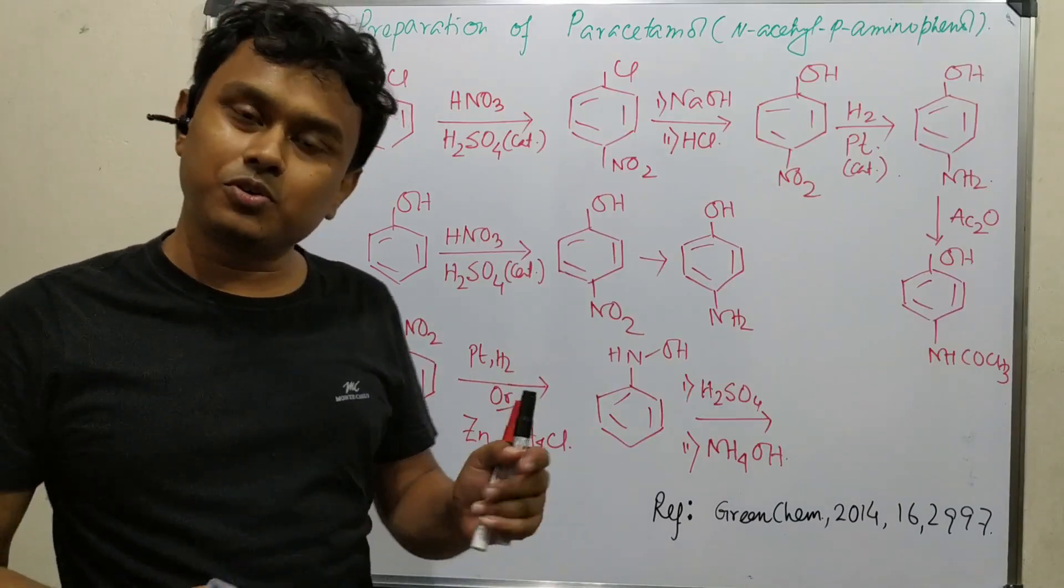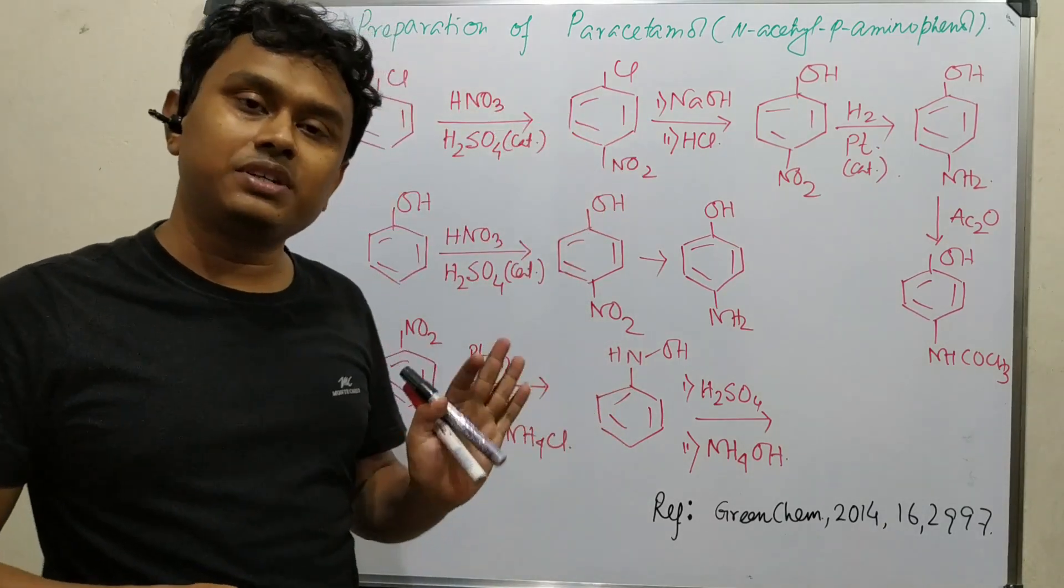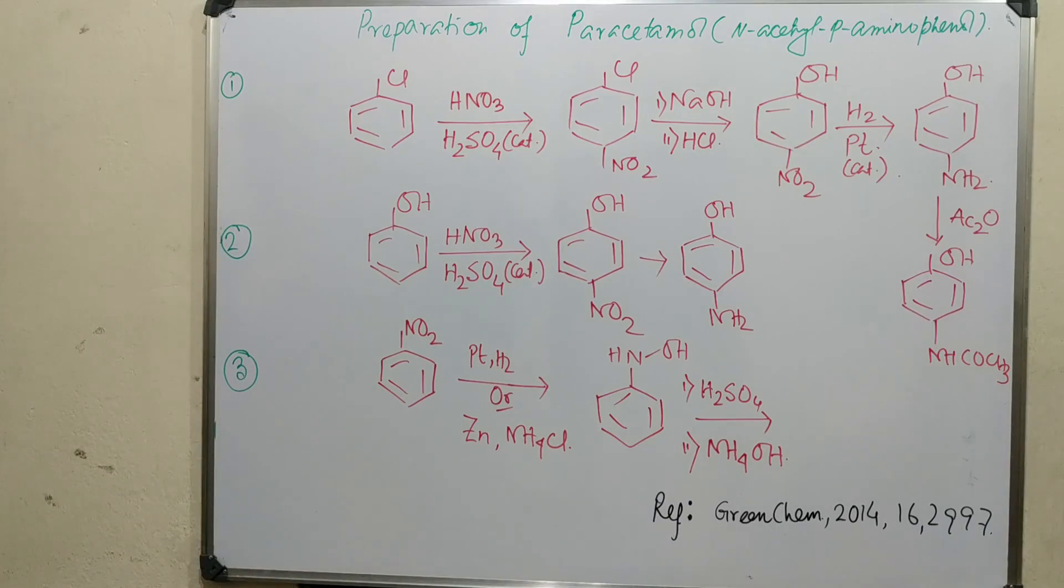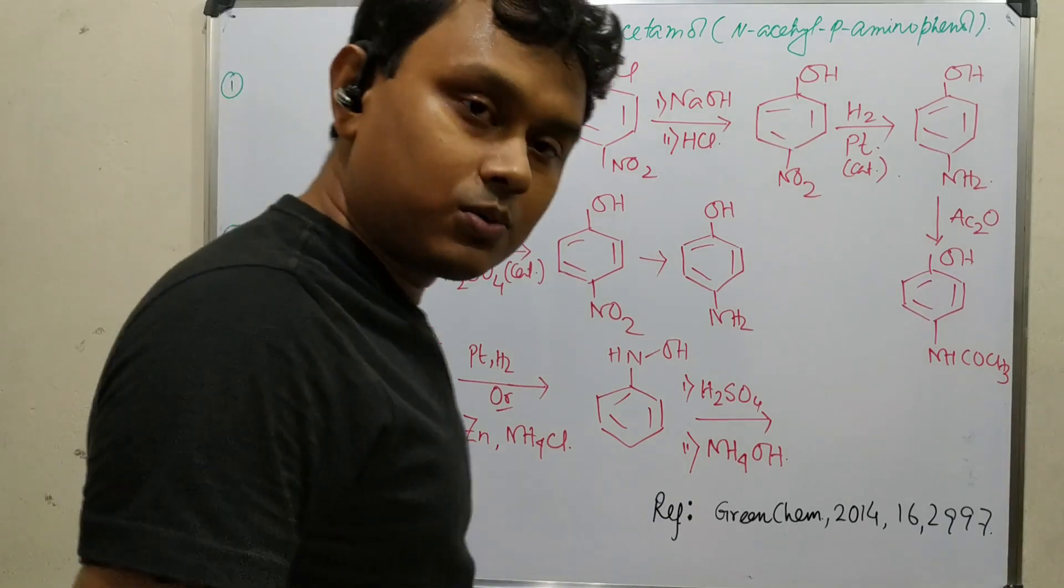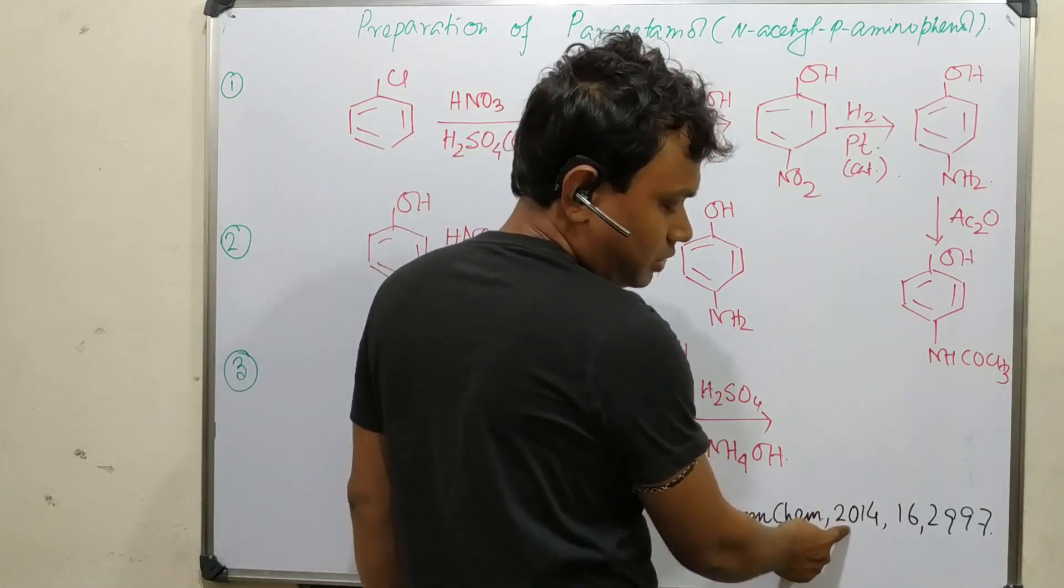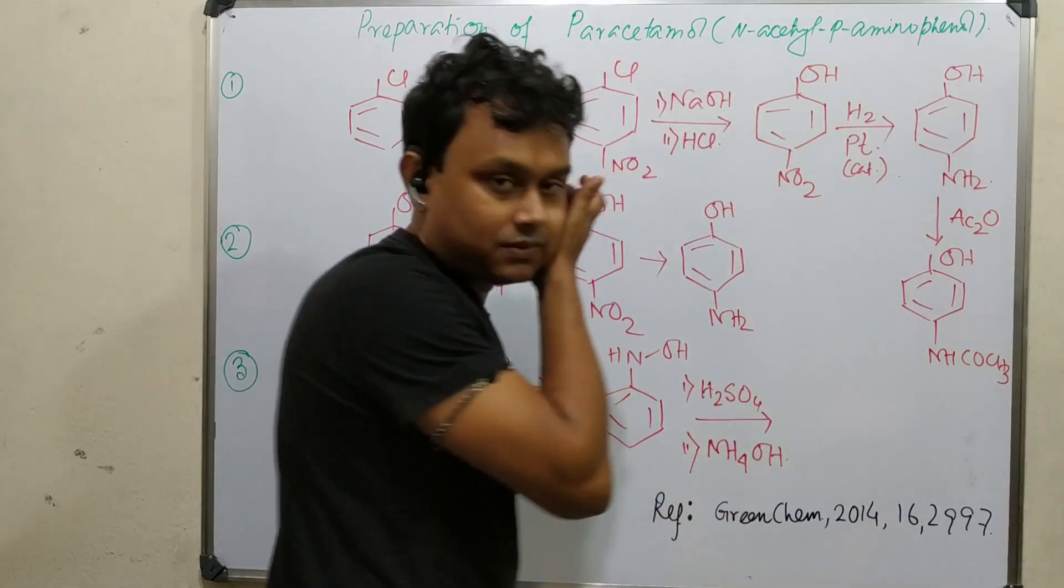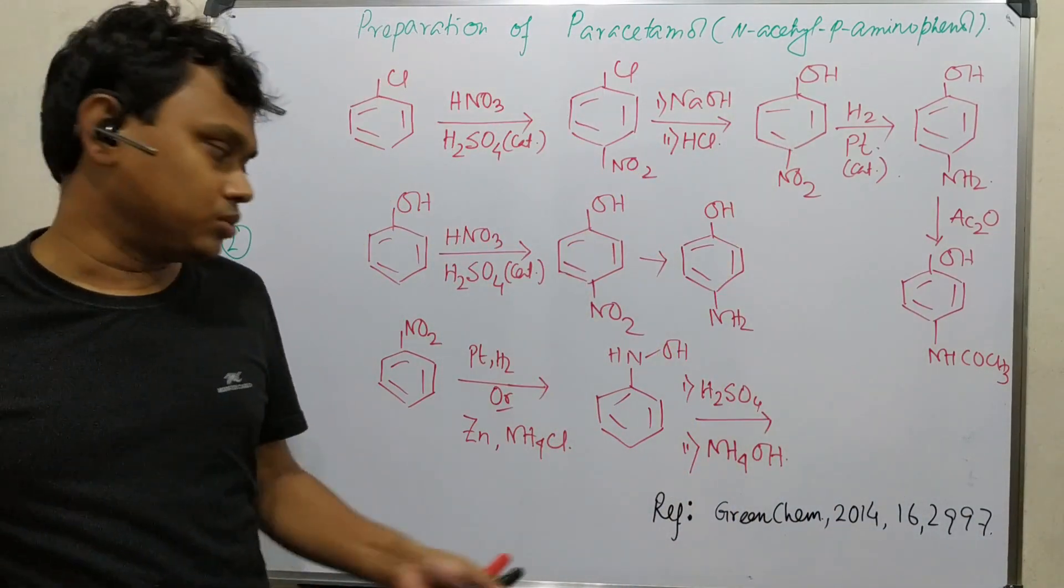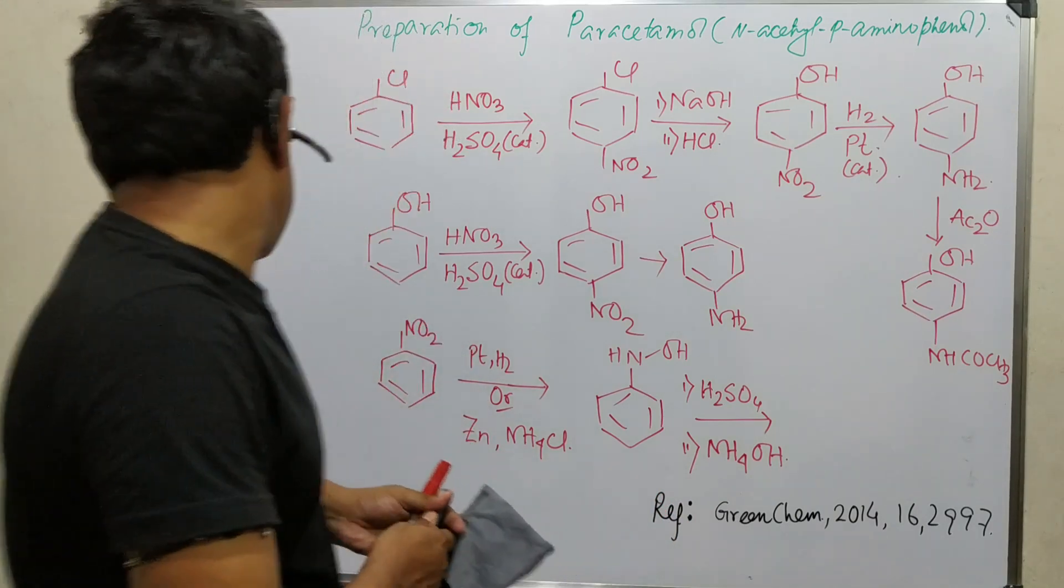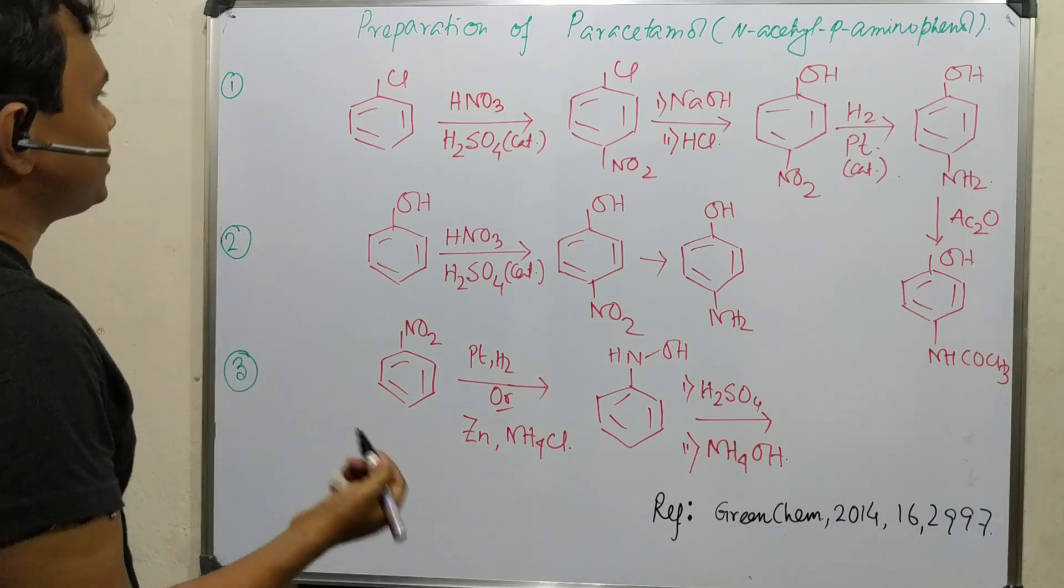Before going to discussion, I want to mention that the examples of chemistry you are learning here have been taken from a manuscript published in Green Chemistry journal, a very renowned journal from Royal Society of Chemistry. This Green Chemistry published in year 2014, volume 16, page number 2997. You may go through this paper if you want to learn details about it. Let's start. Three ways we will discuss about this preparation. First process.